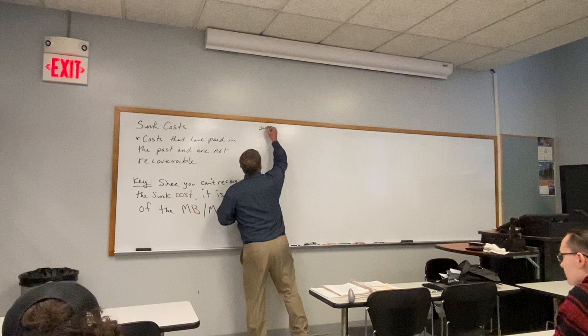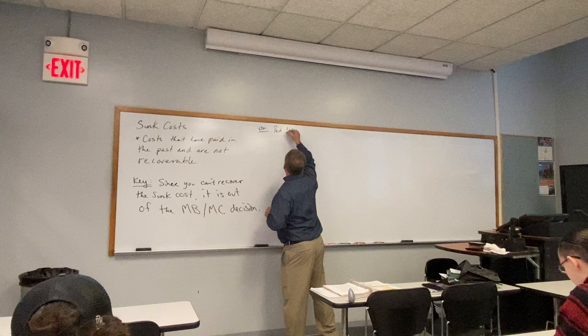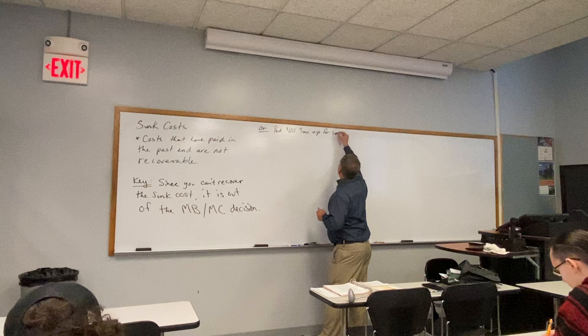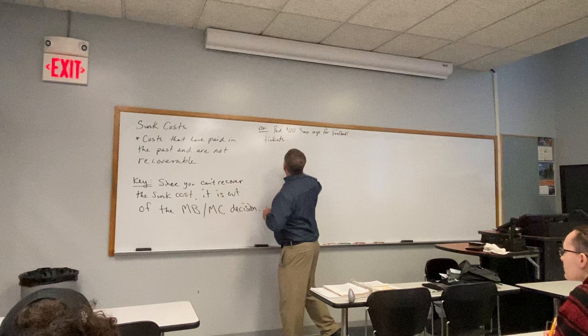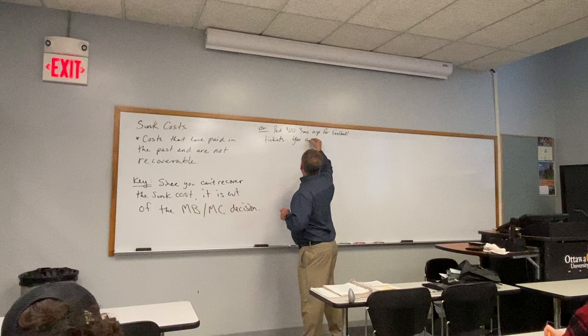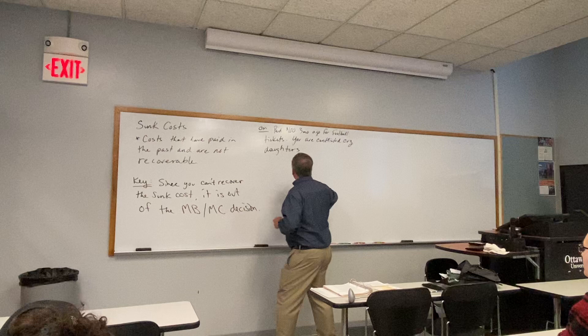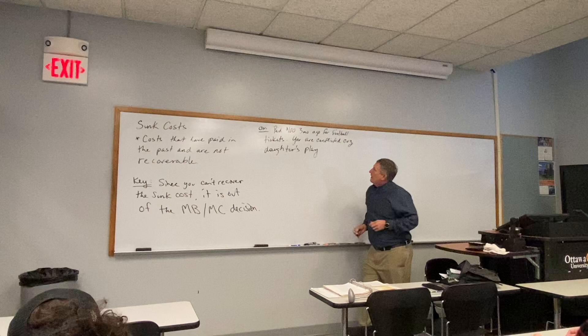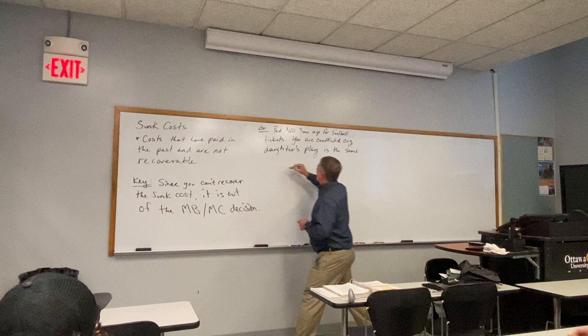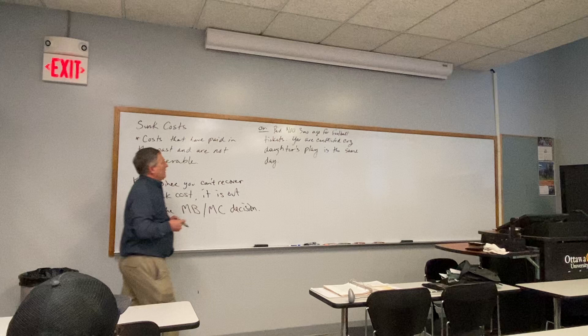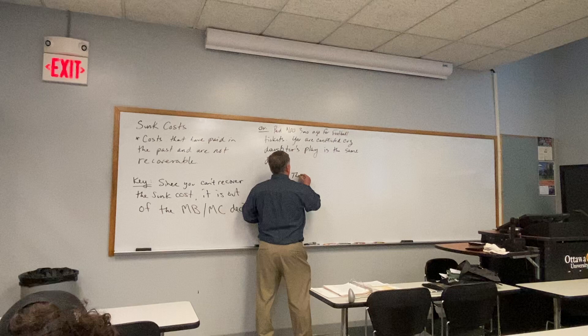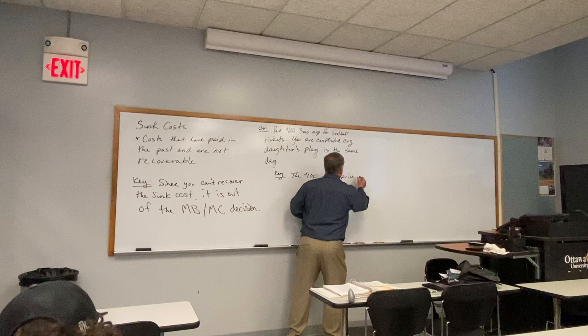For example: you paid $100 three months ago for Chiefs tickets, but you're conflicted because your daughter's play is the same day. The key point is the $100 ticket price is a sunk cost.